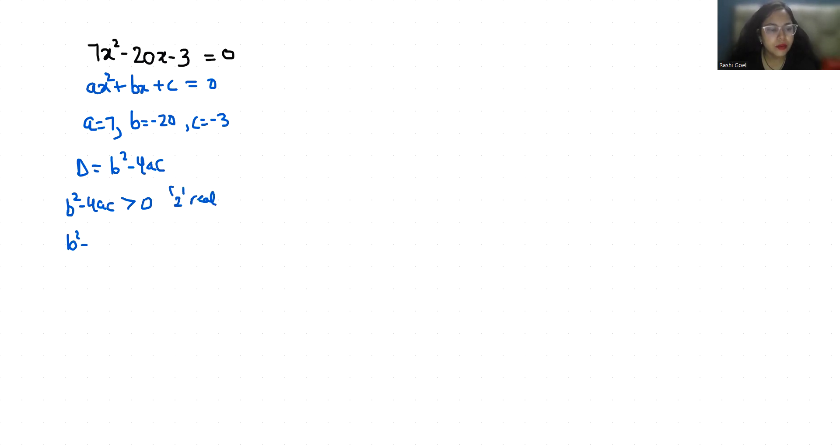If it is less than zero, negative, then two complex solutions exist. And if it equals zero, that means only one real solution exists. So let's find out.